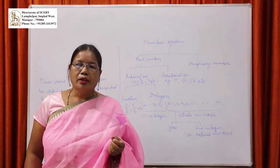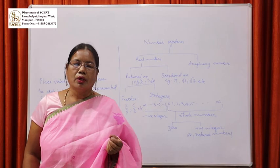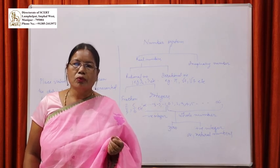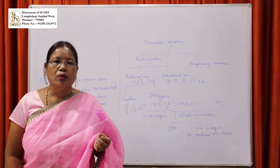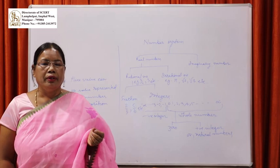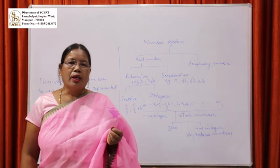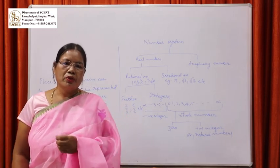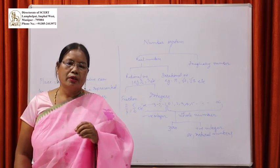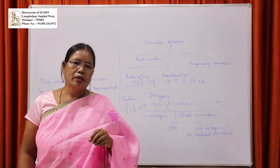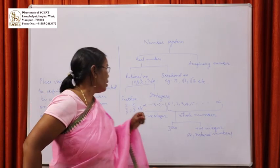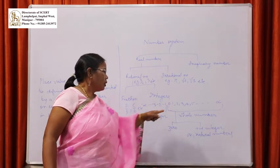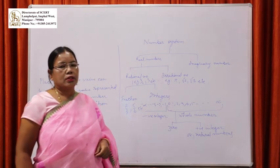If one number is high, starting from 0, 1, 2, 3, 4 up to infinity — that is one type. If we go in the other direction: minus 1, minus 2, minus 3 up to infinity in the negative direction.